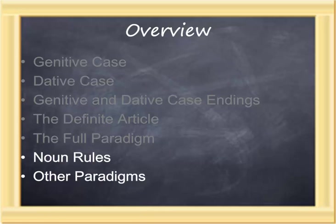So far in this lesson we've talked about the genitive case for possession, the dative case for the indirect object with keyword 'to,' the case endings, the definite article, and the full paradigm. We have yet to touch on the noun rules, which help make sense of these charts, and a couple of additional paradigms before we finish this lesson.